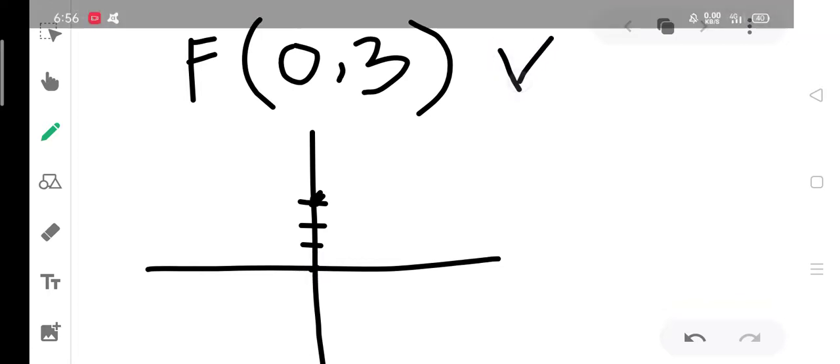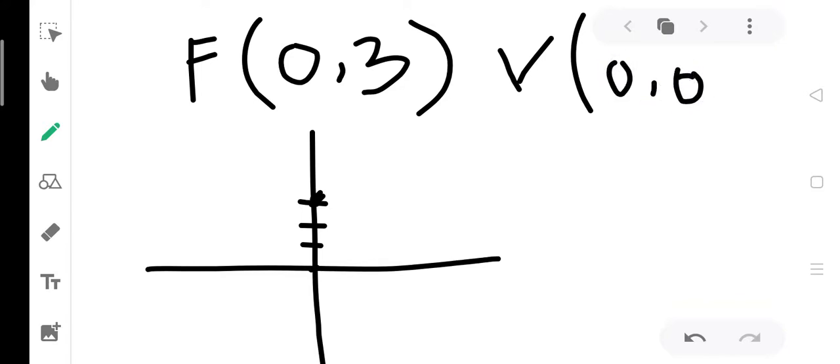Our vertex is at (0,0), at the origin. The value of P is the distance from the vertex at the origin to the focus, so the value of P is 1, 2, 3. The value of P is 3.